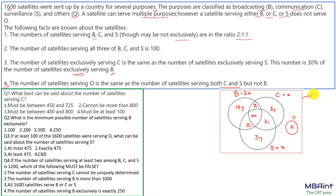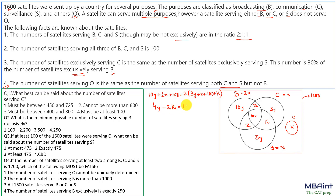We know the total number of satellites is 1600. Now let's write equations from the relations we have. The first relation is that B is twice C. Total B = 10y + 2z + 100, and twice of C = 2 × (3y + z + 100 + k). Simplifying this gives us: 4y, the 2z terms cancel, and we get 2y − k = 50. This is one equation relating y and k.